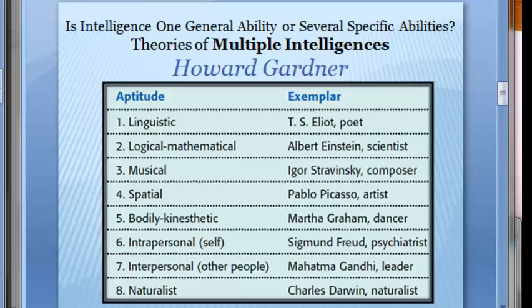Gardner's eight intelligences include: linguistic — verbal or writing ability, reading, speaking. Logical-mathematical — good with numbers, math, science, and logic, like thinking through problems as a lawyer might. Musical — you might compose, or learn better by putting things into beats or rhythms.